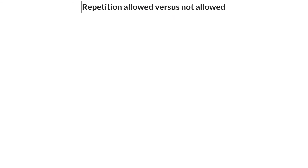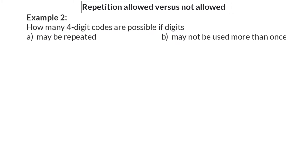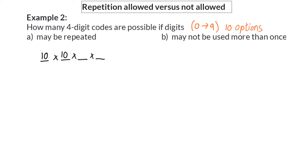Next, let's have a look at the difference between questions where repetition of the options is allowed versus not allowed. Example 2: how many four-digit codes are possible if digits may be repeated? Here we choose between all one-digit numbers, meaning we have options from 0 up to 9, giving us 10 different options to choose from. In part A, the digits may be repeated. We need to form a four-digit code, which means we have four tasks, and for each task we have 10 options from 0 to 9. For example, you can have 8-8-8-8 as your code, where 8 is repeated. This means that we have 10,000 different combinations.